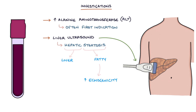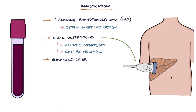Ultrasound does not indicate the severity, the function of the liver, or the presence of fibrosis, and an ultrasound scan can actually be normal in non-alcoholic fatty liver disease. The enhanced liver fibrosis, or ELF, blood test is the first-line investigation for assessing fibrosis in NAFLD. It measures three markers and uses an algorithm to provide a result that indicates whether the patient has advanced fibrosis of the liver.